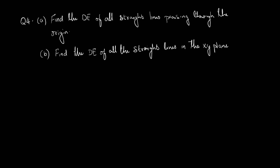Question 4. It has two parts. Part a: find the differential equation of all straight lines passing through the origin. Part b: find the differential equation of all the straight lines in the x-y plane.